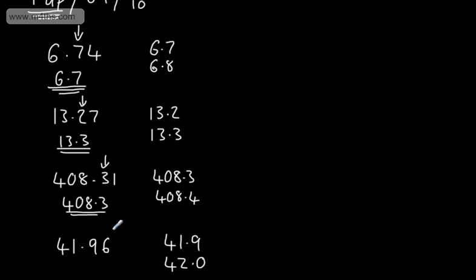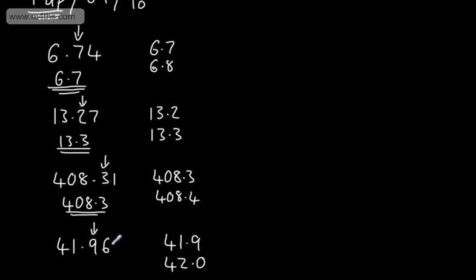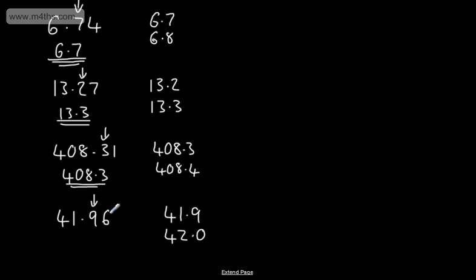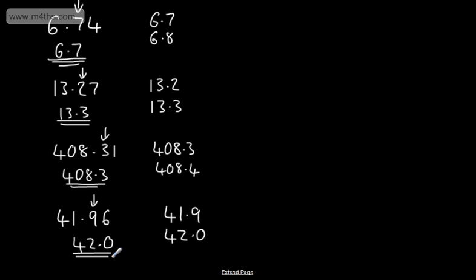Remember, this is the number that could change, and this is the one that's going to influence it. So as a result, if we do round this up, we're going into the next unit value. We can see that's going to be the case, and 6 is greater than 5, so correct to one decimal place, this is 42.0.